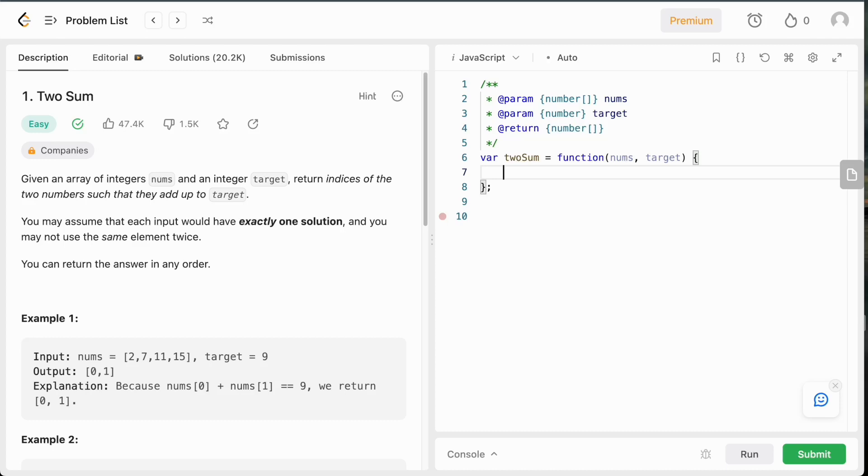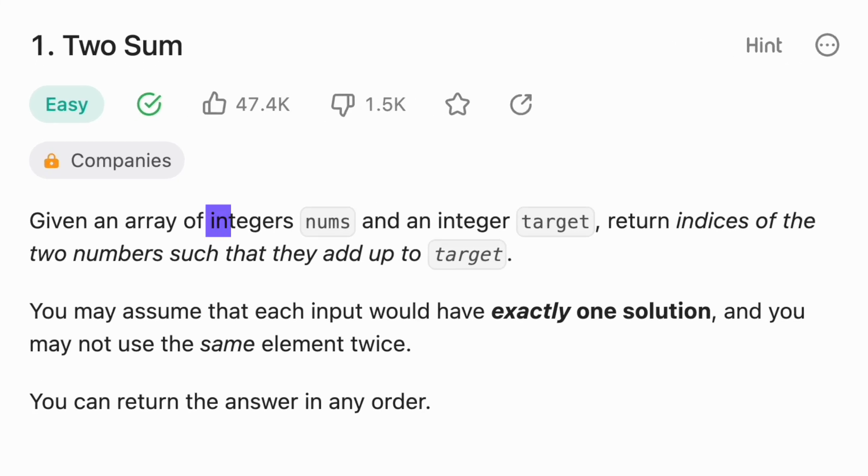Let's solve the most popular LeetCode question which is called Two Sum. We are given an array of integers and a target value, and we need to find two numbers in the array that add up to the target value. Our task is to return the indices of these two numbers.